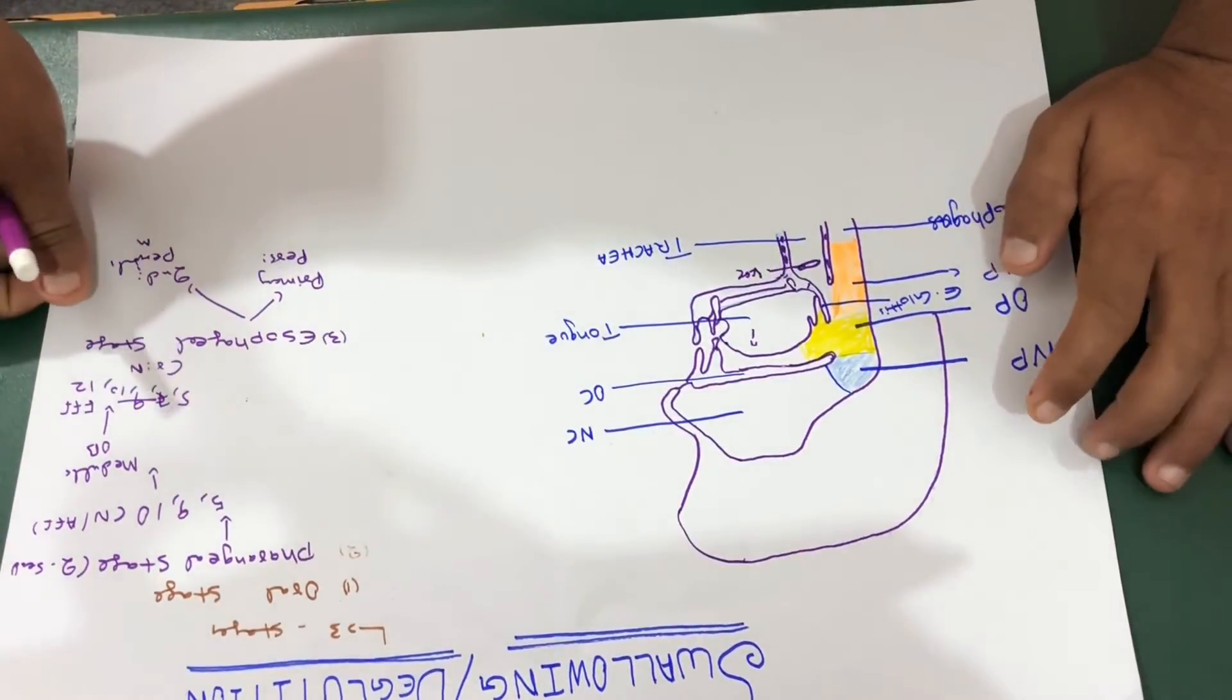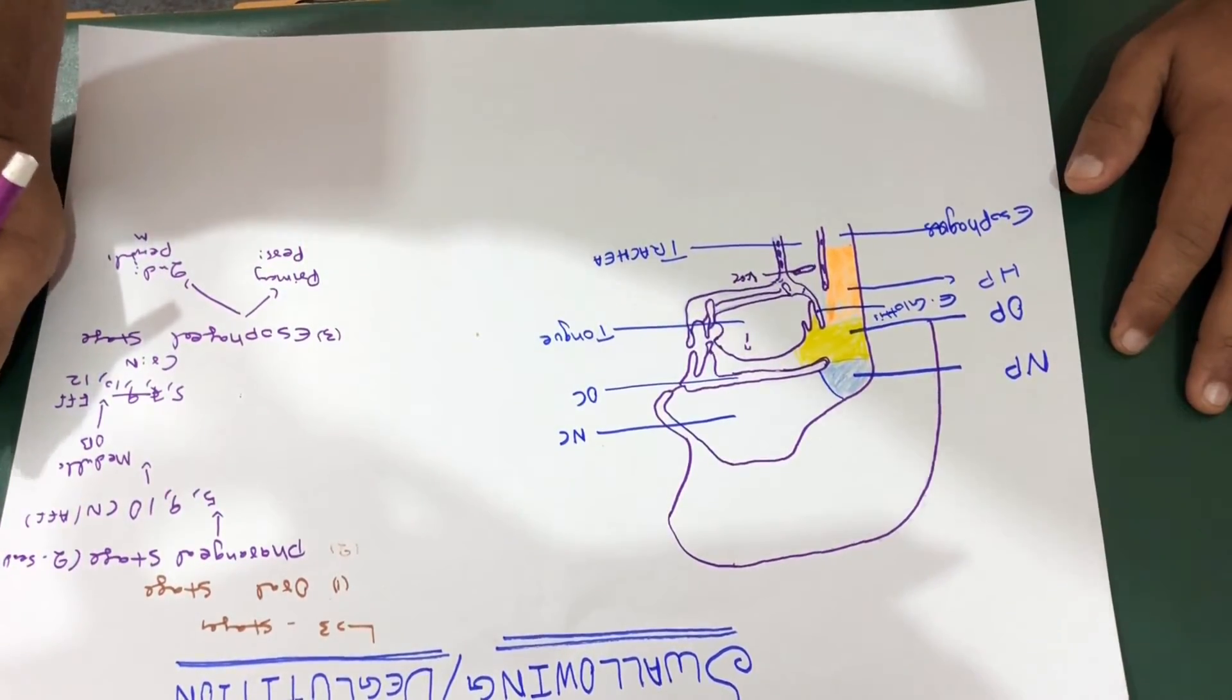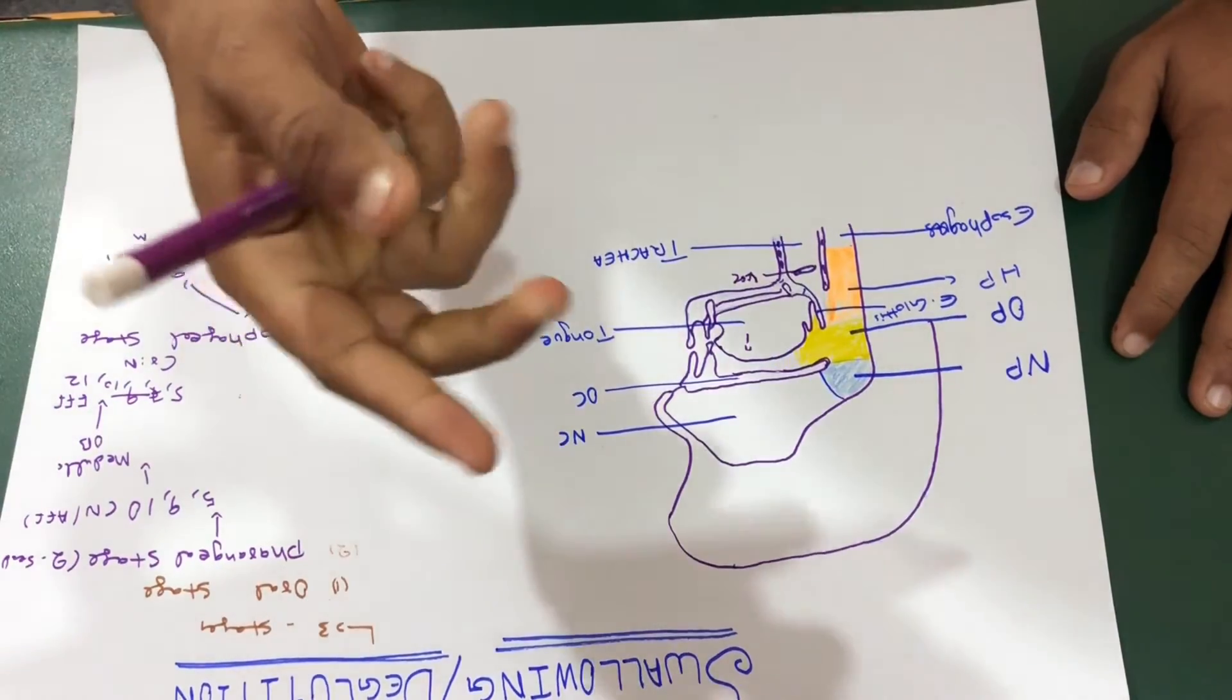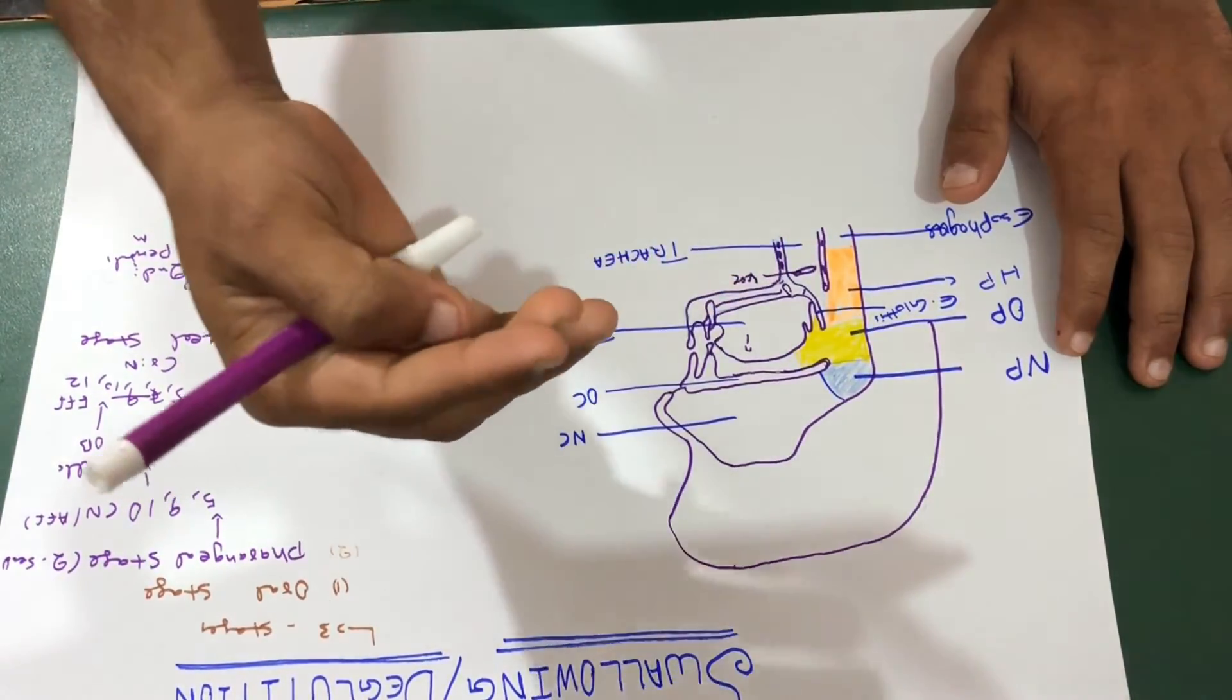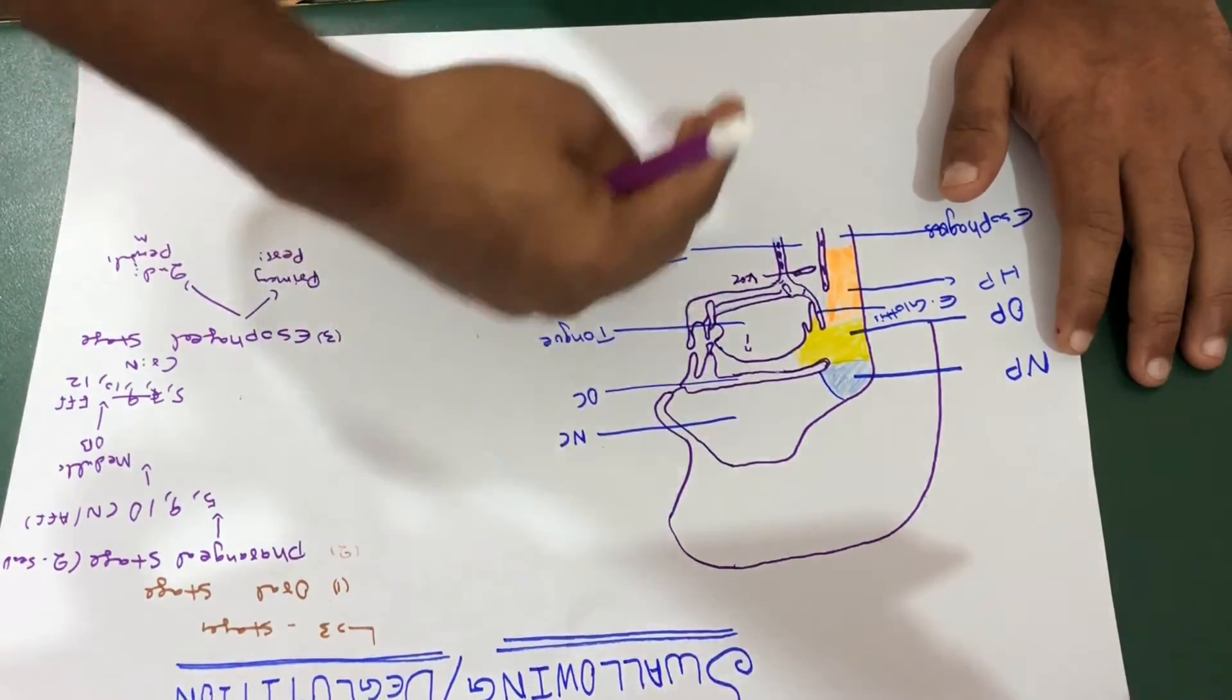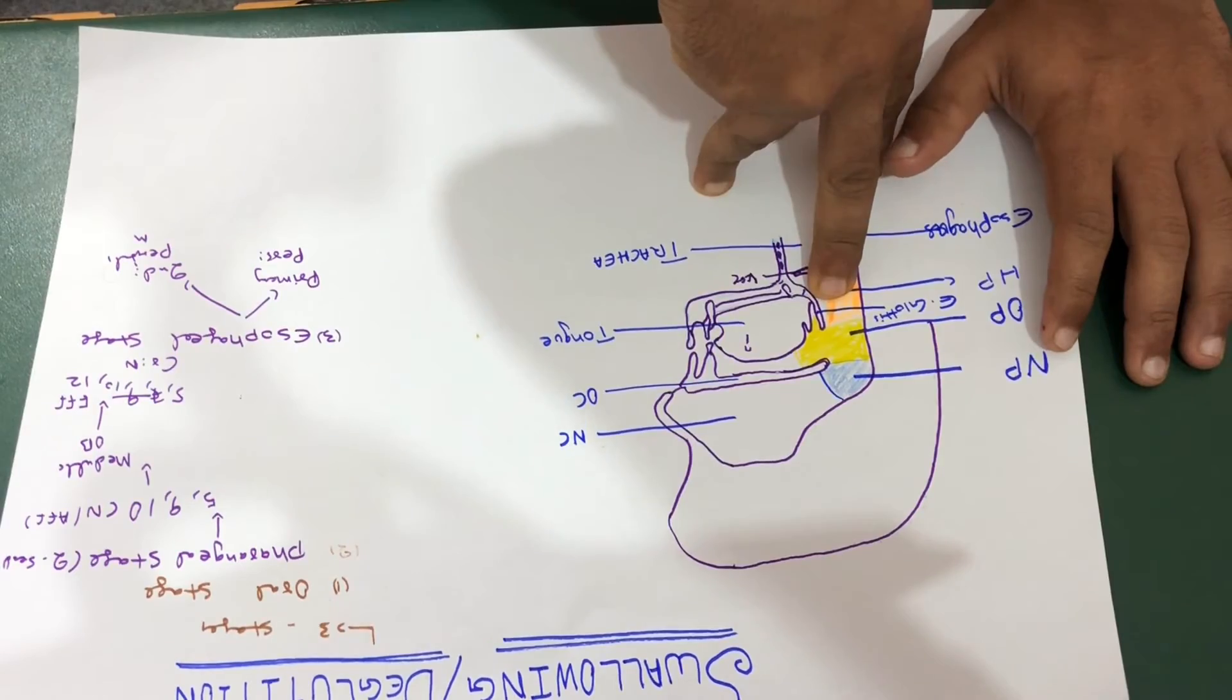For that we need another peristaltic movement which is secondary peristaltic movement which is actually stimulated by the irritation or distention of your esophagus and which continues the food to go all the way to your stomach.